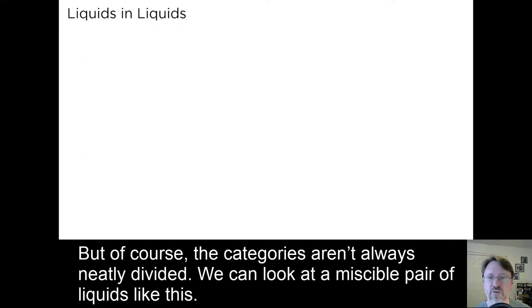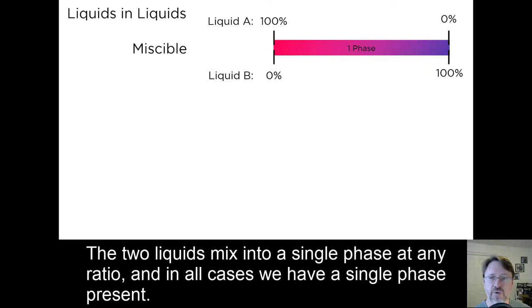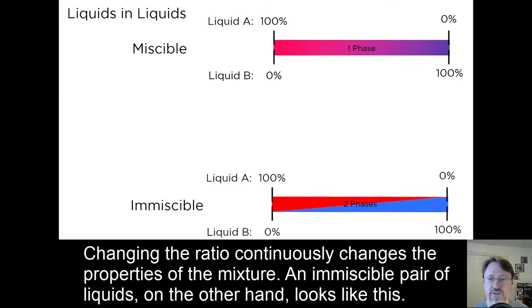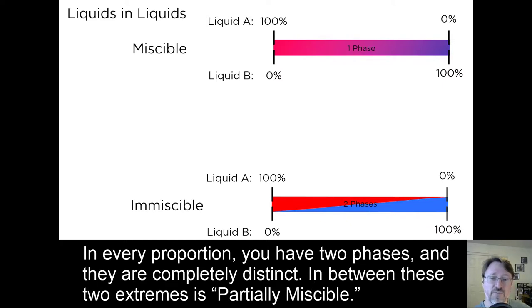But of course, the categories aren't always neatly divided. We can look at a miscible pair of liquids like this. The two liquids mix into a single phase at any ratio, and in all cases we have a single phase present. Changing the ratio continuously changes the properties of the mixture. An immiscible pair of liquids, on the other hand, looks like this. In every proportion, you have two phases, and they are completely distinct.